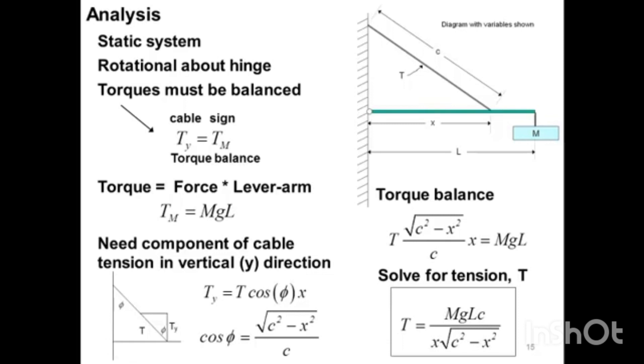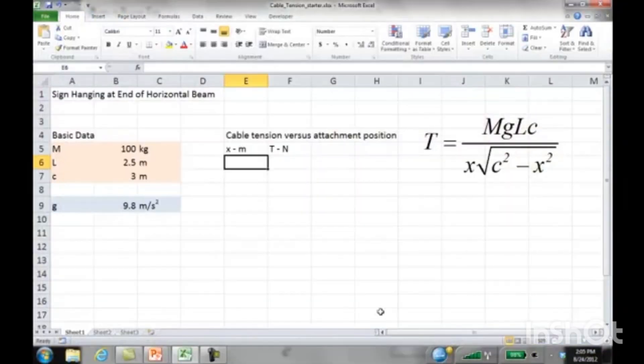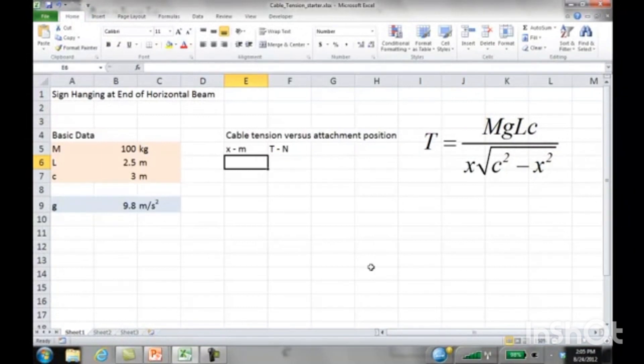Let's try to solve this in Excel. Excel is a nice tool to do multiple engineering calculations because you can do case studies in an organized way. Over here on the left, I've put in labels for different things. Our basic data: the mass of the sign is 100 kilograms, length of the beam is 2.5 meters, and the cable is 3 meters, with gravitational constant 9.8 meters per second squared.